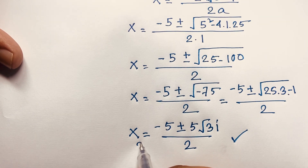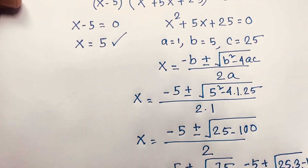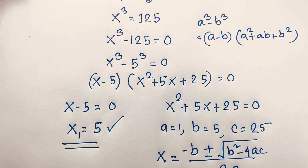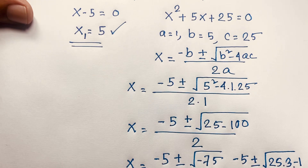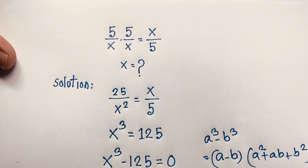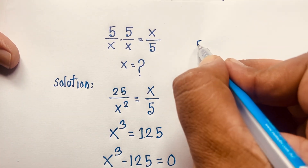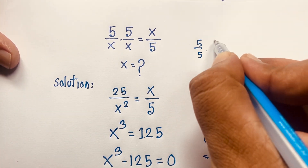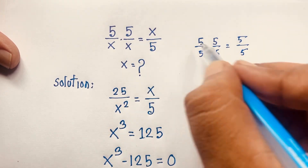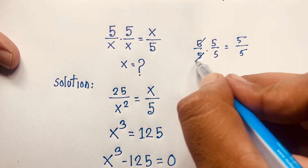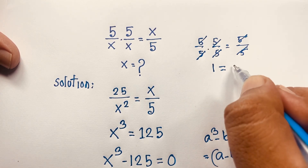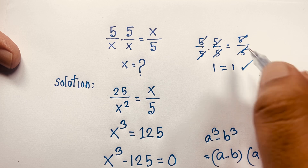The real solution is x equals 5, and the complex solutions are x equals negative 5 plus or minus 5i root 3 over 2 — this is the amazing part. Let's verify: if x equals 5, then 5 over 5 times 5 over 5 equals 5 over 5. Each fraction cancels to 1, giving 1 equals 1. Left hand side equals right hand side.